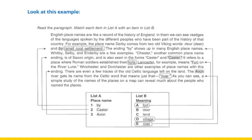Now we have an example for our matching task. You need to read the paragraph and match each item in List A with an item in List B. As you can see, you're given two lists. List A contains place names: 'by', 'caster', and 'Avon'. List B contains different meanings labeled A through E. You need to find out which meaning in List B corresponds to each place name in List A — for example, does 'by' refer to A, B, or C? Some answers can be repeated, so that's totally normal.